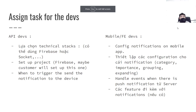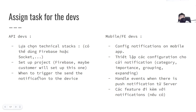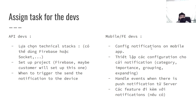Next, we look at assigning tasks for developers. The API dev would choose the technical stack, set up the project, and determine when to trigger sending the notification to the device — for both push and in-app notifications. The mobile or frontend dev will need to configure the notification on the mobile app, handle the event when they receive the notification from the API, and populate it into the application.